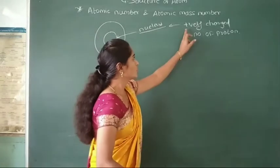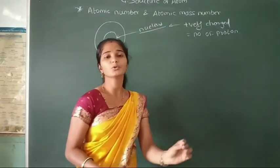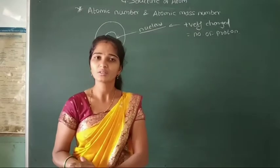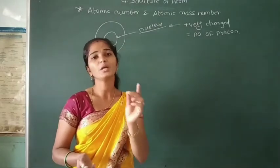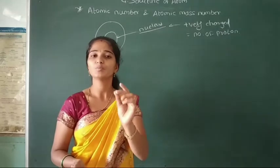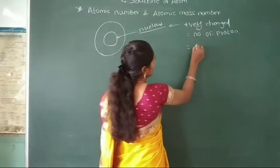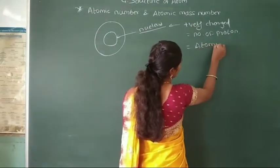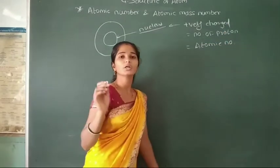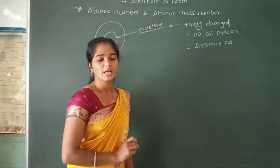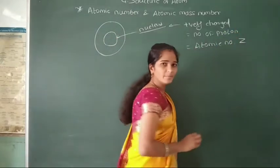The number of positively charged particles, or number of protons, present in the nucleus — this number is called the atomic number of that particular element. This atomic number is represented by the symbol Z.